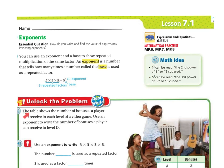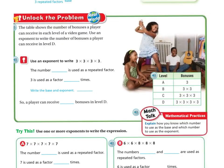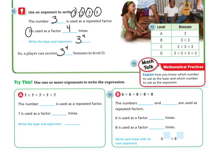Let's unlock the problem. The table shows the number of bonuses a player can receive in each level of a video game. Use an exponent to write the number of bonuses a player can receive in level D. So we're going to write 3 times 3 times 3 times 3. The number 3 is the repeating factor and it's used 4 times, so the base is 3 and the exponent is 4. A player can receive 3 to the 4th power bonuses in level D.